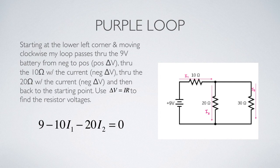I can only use the loop rule one less time than there are loops. So I'm going to apply the loop rule first to that purple loop, the left-hand square section of the circuit. I'm going to start at the lower left corner and go clockwise. The first item I encounter is the 9-volt battery. I'm going from the negative terminal to the positive terminal, so I put it down plus 9.